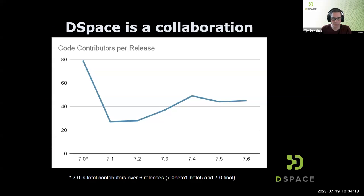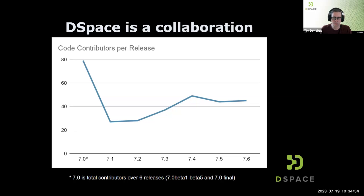DSpace 7.0 had the most unique code contributors by far, because it was a massive amount of work through several betas to get it out the door. We've slowly been ramping back up to about 50 people contributing code per release, with others contributing documentation and translations. I anticipate this will keep ramping upward as more people get comfortable with DSpace 7. We'd love any volunteers interested in jumping in.